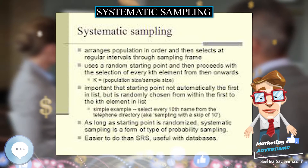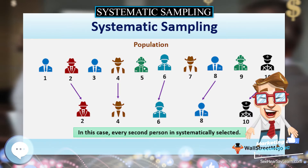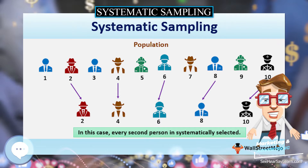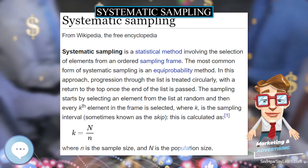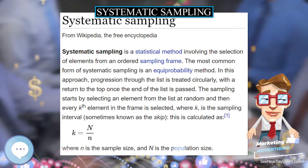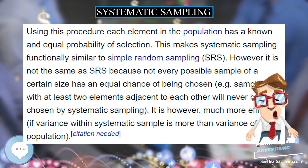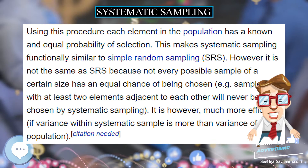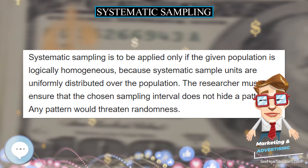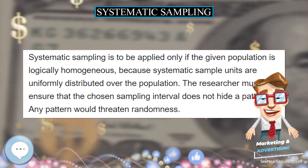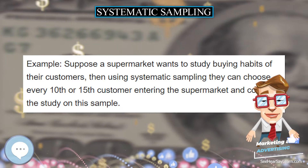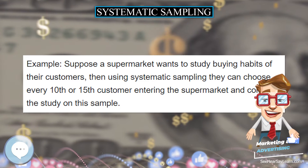From the sampling frame, a starting point is chosen at random, and choices thereafter are at regular intervals. For example, suppose you want to sample 8 houses from a street of 120 houses. 120 divided by 8 equals 15, so every 15th house is chosen after a random starting point between 1 and 15. If the random starting point is 11, then the houses selected are 11,